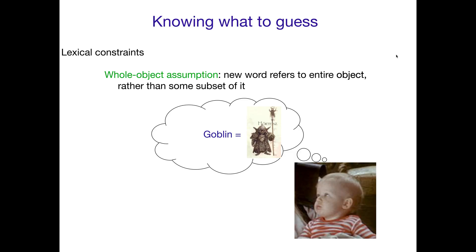One thing that helps children zero in on the right meaning has to do with the lexical constraints they bring to the word mapping task. One of these lexical constraints is called the whole object assumption, which is exactly what it sounds like. When you hear a new word and figure out which object the person is talking about, you assume the new word refers to the entire object rather than some part of it or some other aspect of it.